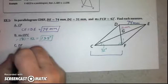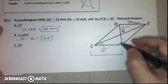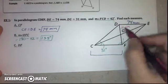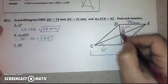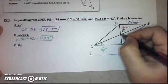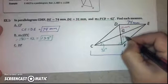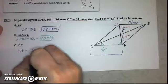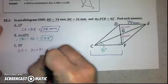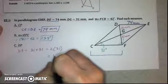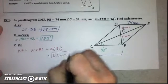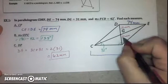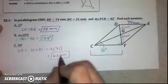Lastly, we need to find DF, which is the full diagonal. DG is part of that diagonal. Remember that in parallelograms, diagonals bisect each other, and bisect means to cut into two equal parts. So if DG is 31, then FG is also 31 millimeters. Therefore DF equals 31 plus 31, or 2 times 31, which is 62 millimeters — since DG is half of the diagonal, both halves are 31, giving you 62.